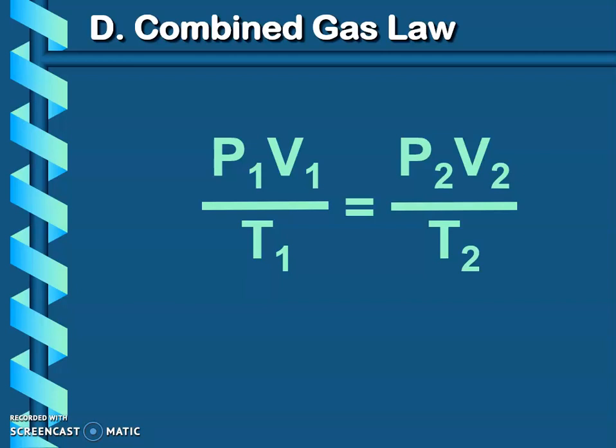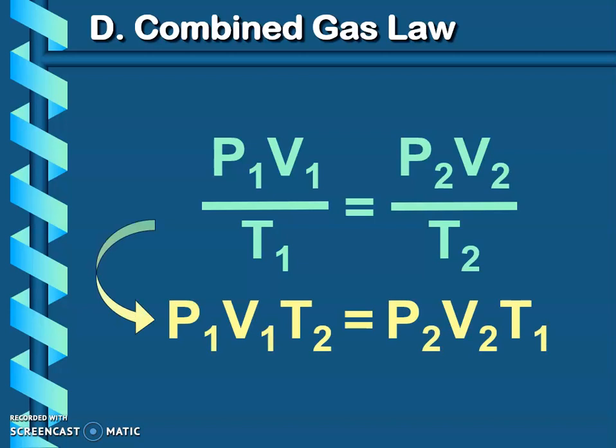If you would like it in one straight line, we can also write the combined gas law this way. But here we need to be careful because we have to pay attention to those temperatures. Notice what we had to do in order to write it out all on one line - we have to switch those temperatures. So P1 times V1 times T2 equals P2 times V2 times T1, and that's because of the way that temperature relationship exists with pressure and volume.